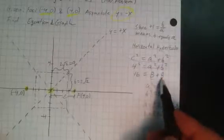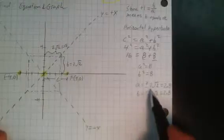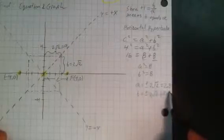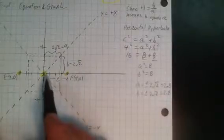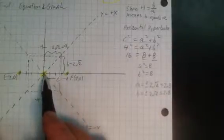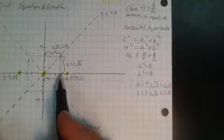b squared has to be 8. That means that a and b are both 2 root 2, which is about slightly over 2 and 3 quarters, which allows us to plot. So I come away a distance a, 1, 2, and 3 quarters.